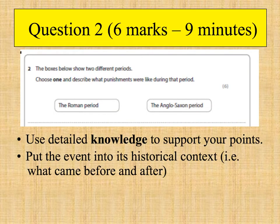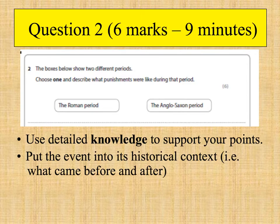Question 2 is worth 6 marks, and you should spend 9 minutes on it. This question tests your knowledge of the course. You'll be given two different time periods, or two different individuals, or two key events, and you just choose one of the boxes — so there's an element of choice. You would describe what punishments were like during that period. The key is using detailed own knowledge to support your points, and if it's a key event or individual, put them into their historical context — meaning what happens before and after.